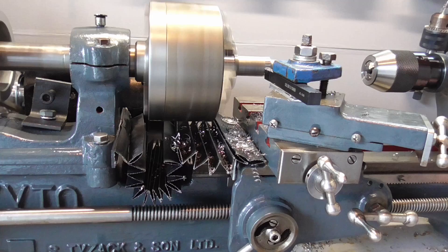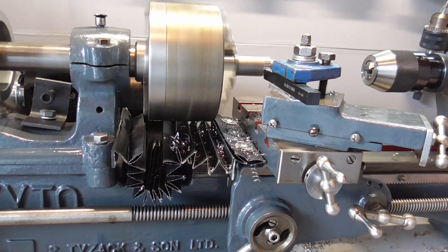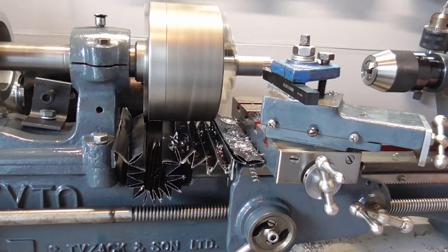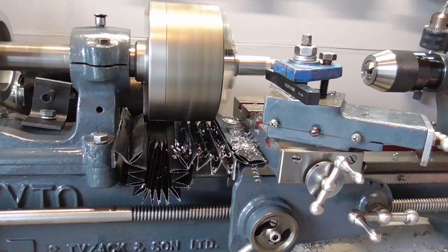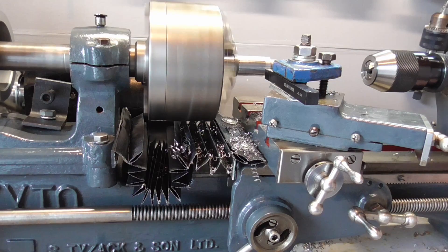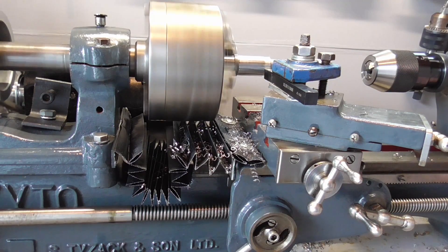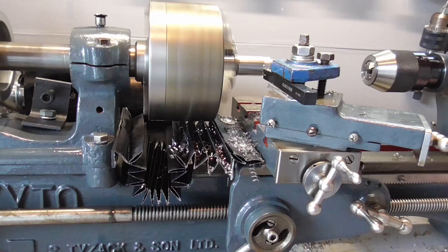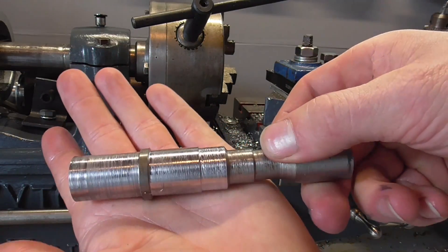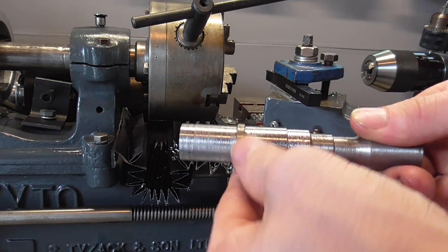When taking a light depth of cut, the surface finish looks decent. But when changing to a larger depth of cut, things start to go downhill. Although the lathe has plenty of power, the surface finish is messed up, indicating that something is moving while it is not supposed to move.